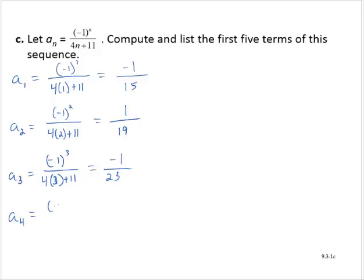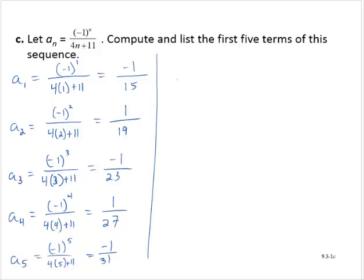a sub 4 would be negative 1 to the fourth power over 4 times 4 plus 11, so that would be positive 1 over 27. And finally, a sub 5 would be negative 1 to the fifth power over 4 times 5 plus 11, so that would be negative 1 over 31. Listing the terms of the sequence: negative 1 fifteenth, 1 nineteenth, negative 1 twenty-third, 1 over 27, and negative 1 over 31. Notice this sequence changes sign with each term — when that happens, we call this an oscillating sequence.